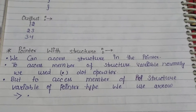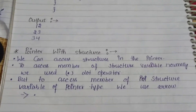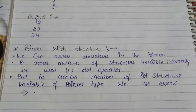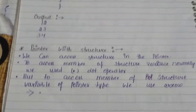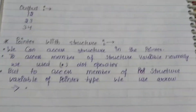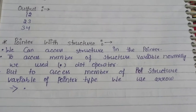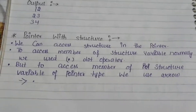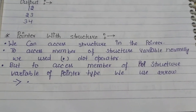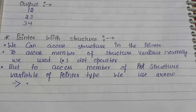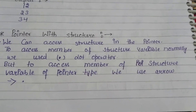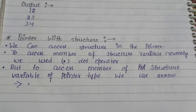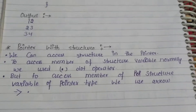The next topic is pointer with structure. We can access a structure through a pointer. To access a member of a structure variable normally we use the dot operator. When we use a pointer to access structure members, we use the arrow operator instead of the dot operator.